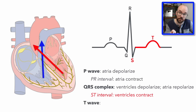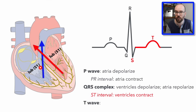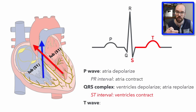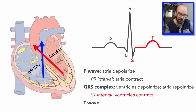When the ventricles contract, we hear the first heart sound — the 'lub' of lub-dub, represented as S1. That sound is caused by the tricuspid and mitral valves snapping shut just before the ventricles pump blood out, preventing blood from rushing back into the atria and forcing it all out through the aorta and pulmonary artery. The first heart sound occurs around the end of the QRS complex as those valves snap shut.